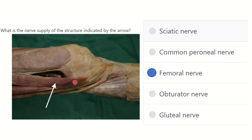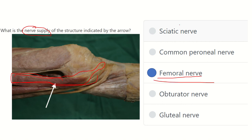So the answer is: this structure is the sartorius muscle, and it is supplied by the femoral nerve. Thank you.